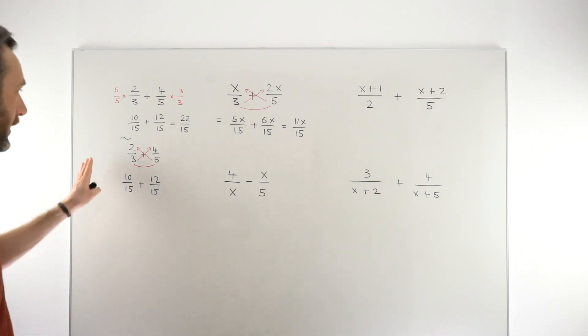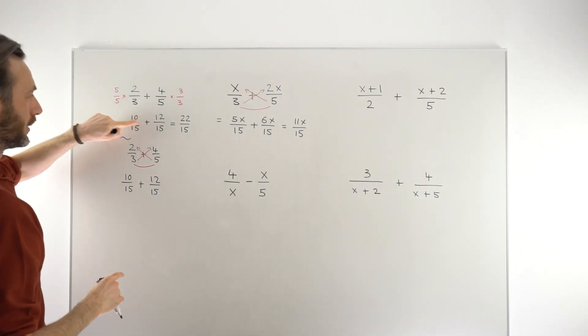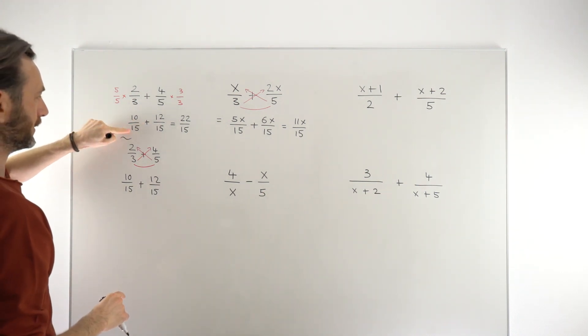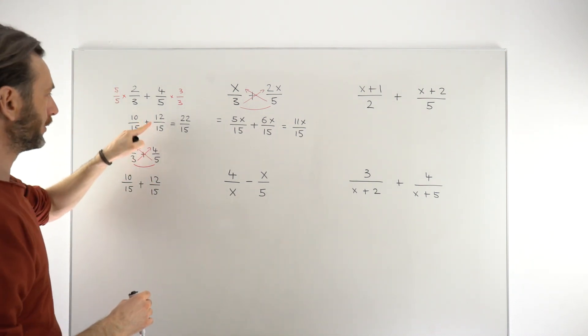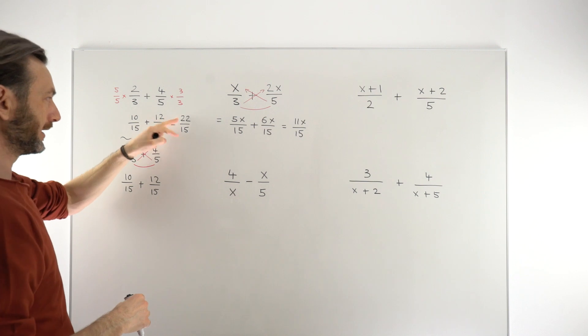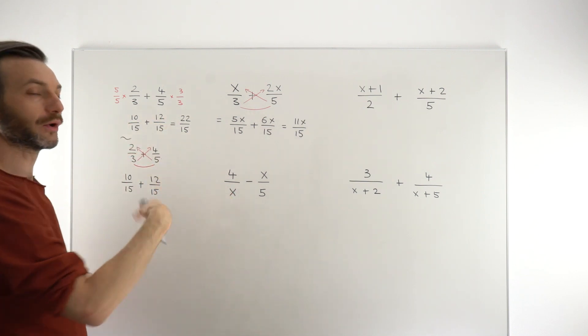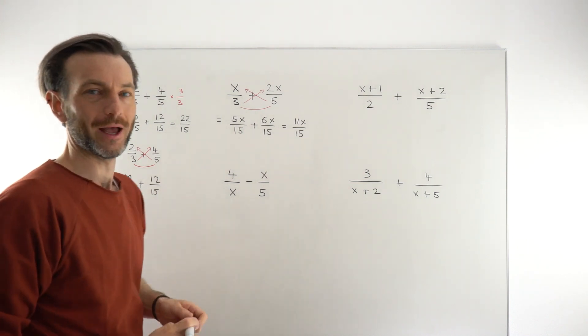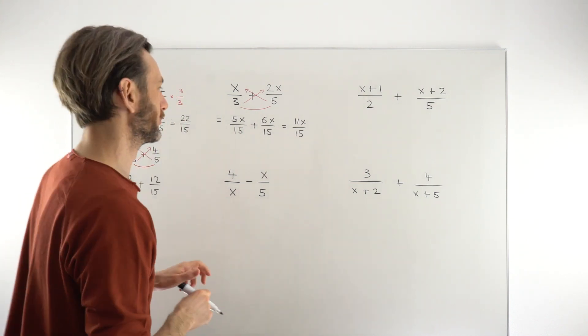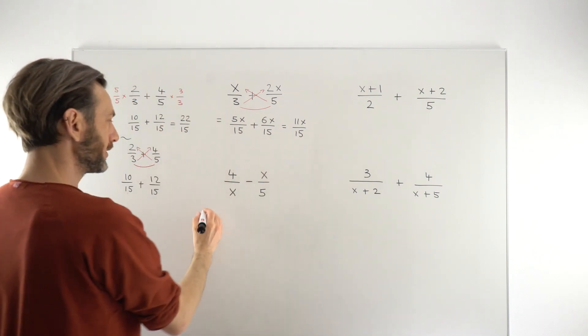A really common mistake is to go ahead and add the 15s. But you don't need to do that because if you think about it here, this is saying we've got 10/15 plus 12/15. So that's going to be 22/15, not 22/30. So you're not adding these guys together. But that's a really common pitfall. So be careful not to do that one. So that's basically how we go about these. We'll apply that same technique down here.